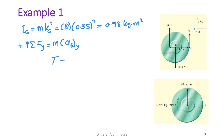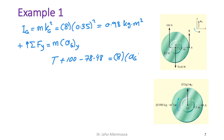The equation becomes: T + 100 − 78.48 = 8·a_Gy. This is equation one.